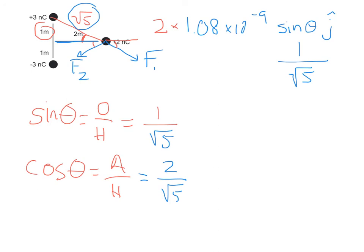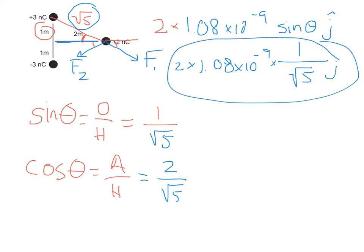So our final answer will be 2 times 1.08 times ten to the negative ninth times 1 over root 5, which is a number. Don't forget the j-hat, because we're saying the total force is in the downwards direction, so we really need a negative sign in front of it. That right there is our final answer. Obviously this is the internet, so if you need to see any part of this again, just back it up and watch it again. I hope that helps — thanks very much.